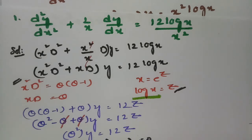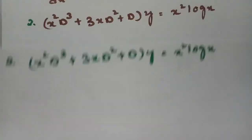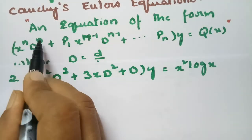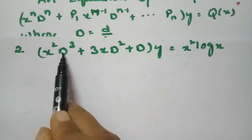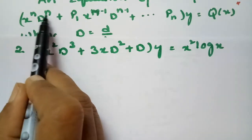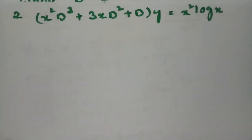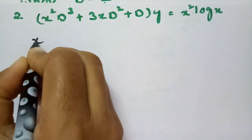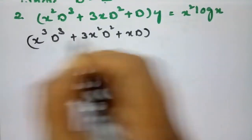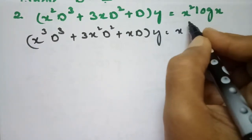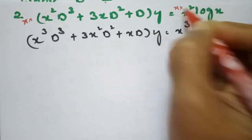Now the second question: observe that if the derivative is D^n there should be x^n; if D^(n-1) there should be x^(n-1). In this problem the powers are unbalanced — where there is D³ there should be x³. So to balance the equation we multiply throughout by x, giving x³D³ + 3x²D² + xD of y = x³*log(x).